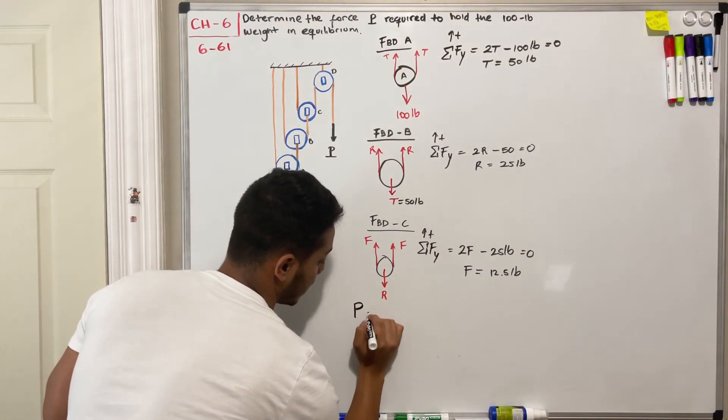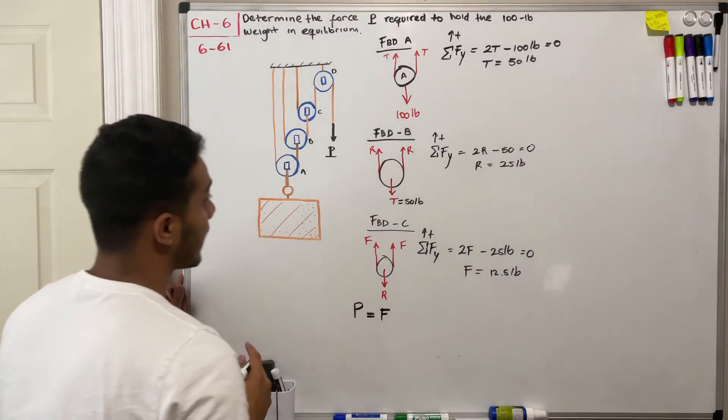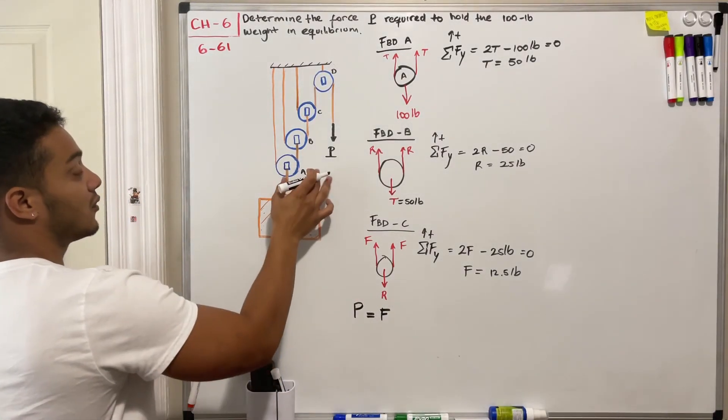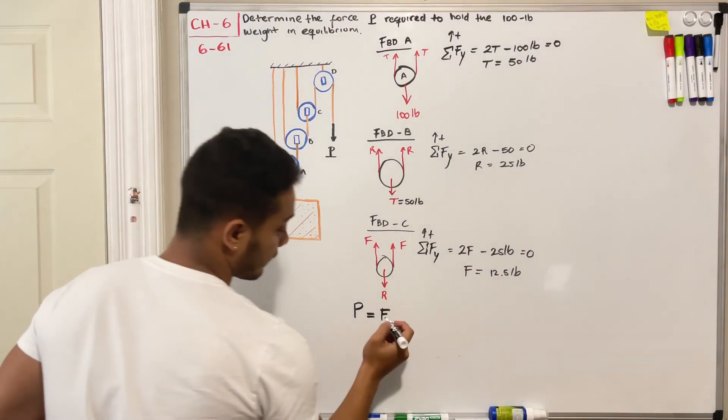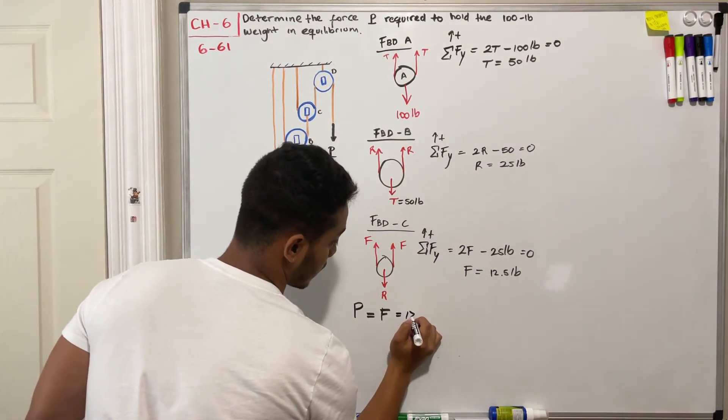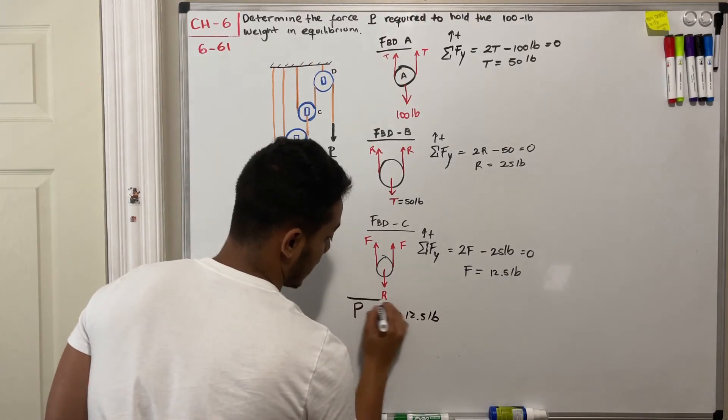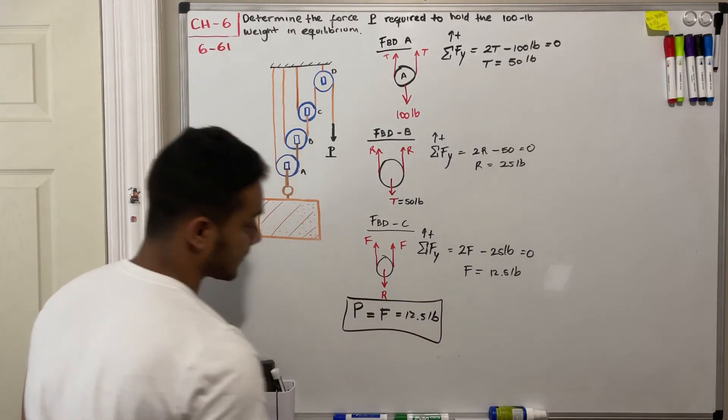Therefore my force P has to be equal to my force F, and that's the key part about solving these pulley systems. Therefore my P is equal to 12.5 pounds, and this is my answer.